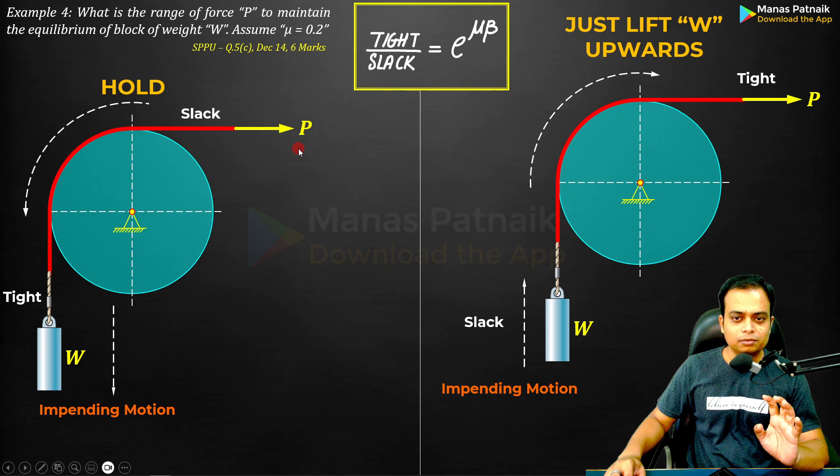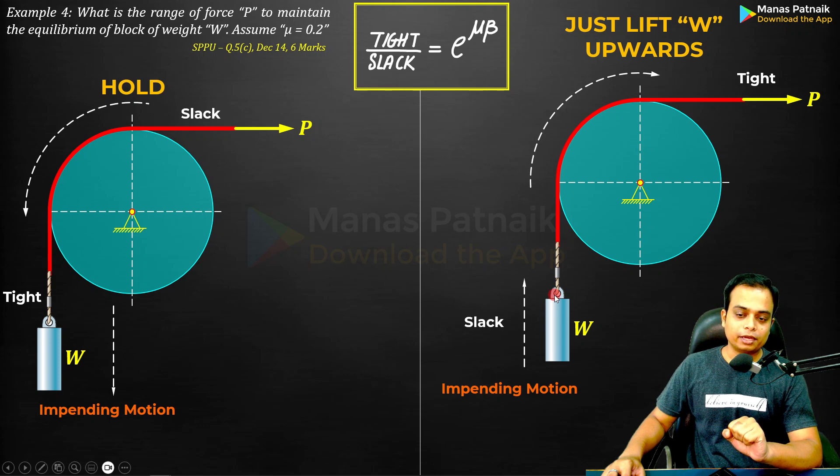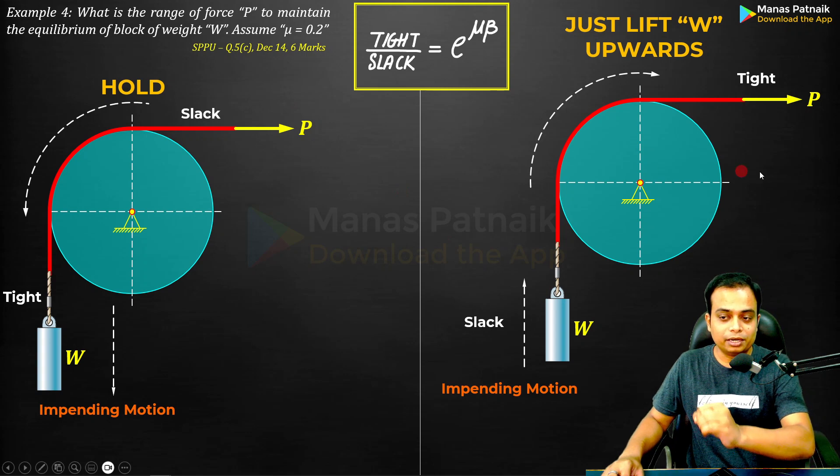What would be the force needed? And in the second case we will apply a sufficient force P which is good enough to just lift this weight W upwards. When you calculate P for both the cases, you are going to get the minimum value and the maximum value.